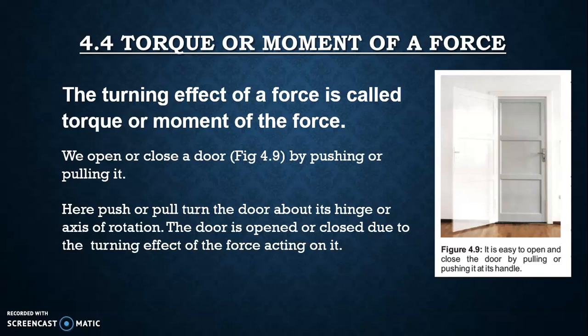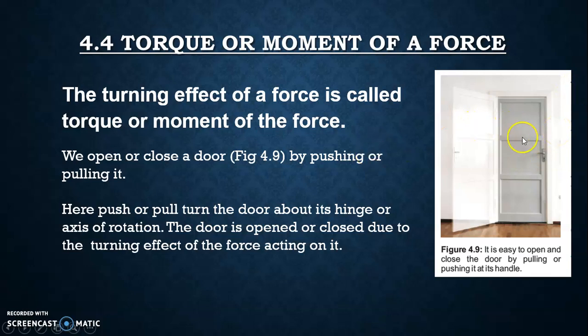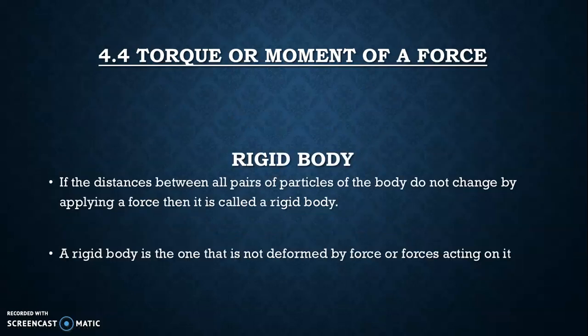Let's look at figure 4.9. Here, a push or pull turns the door about its hinge, which is the axis of rotation. The place where the door is fixed — that line — is known as the hinge, fixed point, or axis of rotation. The door is opened or closed due to the turning effect of the force acting on it. It is easy to open and close the door by pulling or pushing it at its handle, by applying torque on it.